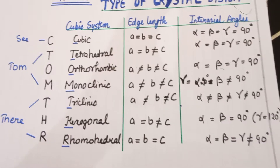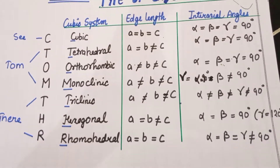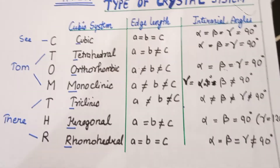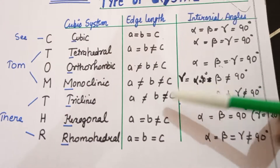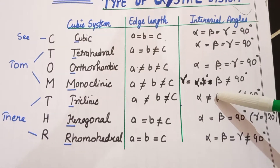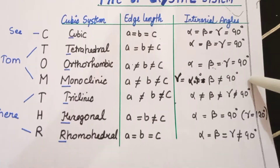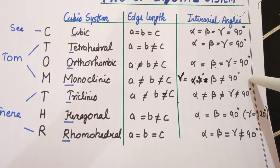Then here is the important one — Monoclinic. Monoclinic is very important because it is Alpha equal to Gamma equal to 90 degrees, but Beta is not equal to 90 degrees.